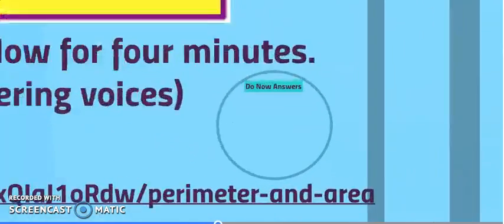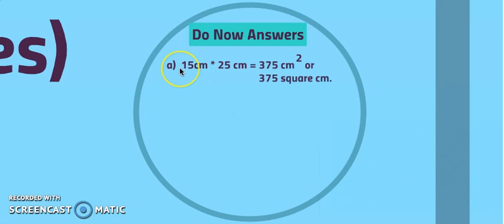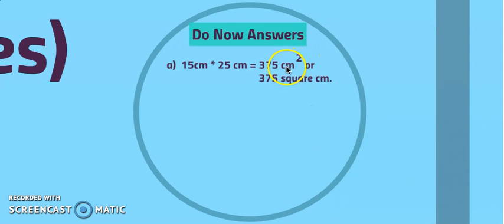Let's go over the answers to the do now. Your first answer is here: length times width or base times height. 15 times 25 is 375 square centimeters. This exponent of 2 means centimeters to the second power, or we sometimes say square centimeters.